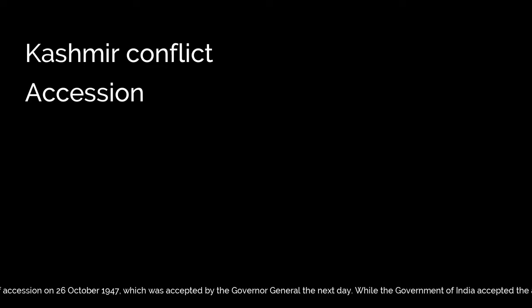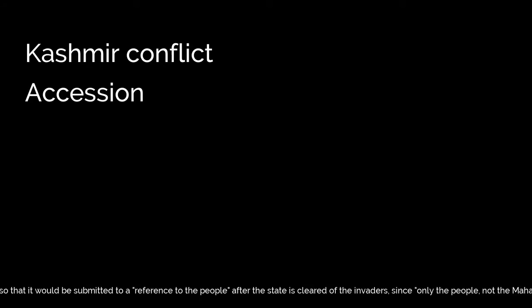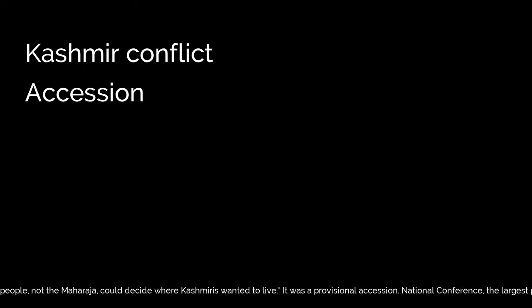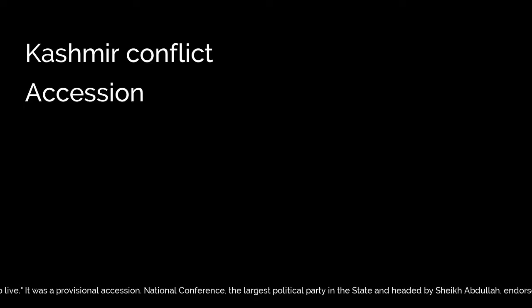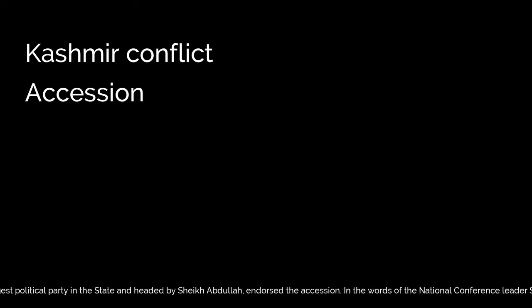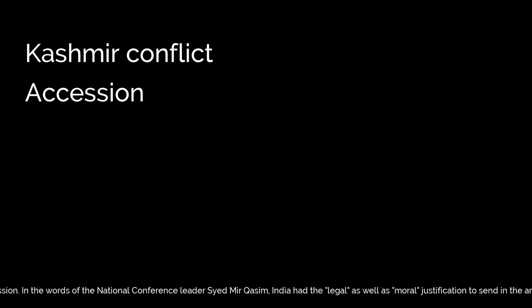While the government of India accepted the accession, it added the proviso that it would be submitted to a reference to the people after the state had been cleared of invaders, since only the people — not the Maharaja — could decide where Kashmiris wanted to live. It was a provisional accession. The National Conference, the largest political party in the state and headed by Sheikh Abdullah, endorsed the accession. In the words of National Conference leader Syed Mir Qasim, India had the legal as well as moral justification to send in the army through the Maharaja's accession and the people's support of it.